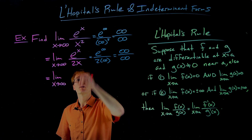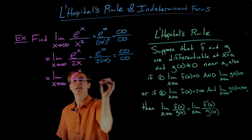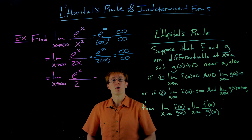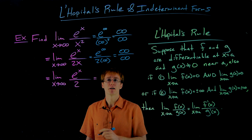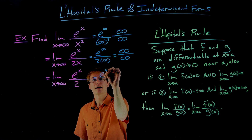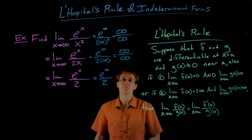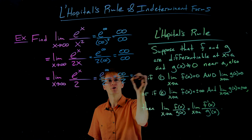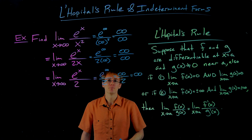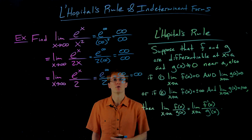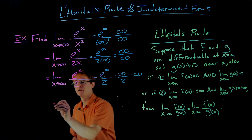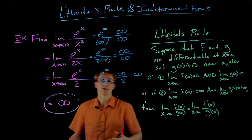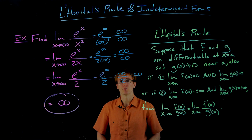Applying L'Hôpital's rule again, the derivative of e to the x is still e to the x, and the derivative of 2x is just 2. When we take the limit as x approaches infinity of e to the x over 2, we get e to the infinity in the numerator but just the constant 2 in the denominator — that approaches infinity over 2. If you take a really big number and divide it by 2, it's still really big. So the limit as x approaches infinity of e to the x over x squared is infinity. This limit does not exist — it diverges, and our function increases without bound.